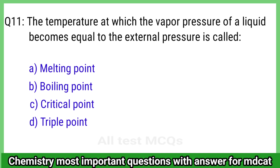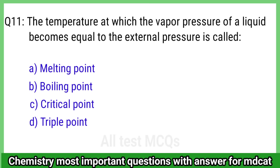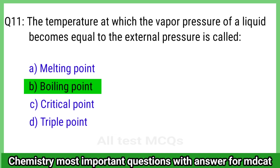Question 11: The temperature at which the vapor pressure of a liquid becomes equal to the external pressure is called? The right answer is option B, boiling point.